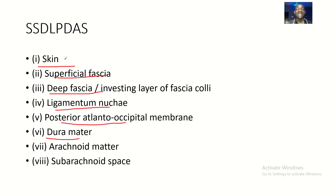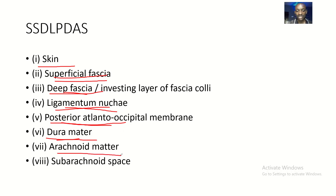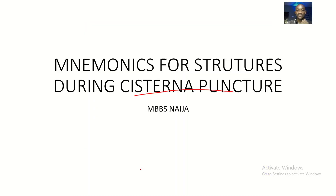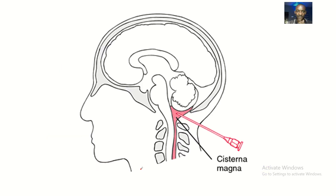Let's go through it again: S, S, D, L, P, D, S — skin, superficial fascia, deep fascia, ligamentum nuchae, posterior atlanto-occipital membrane, dura mater, arachnoid mater, subarachnoid space. These are the structures that you actually pierce when performing cisternal puncture.